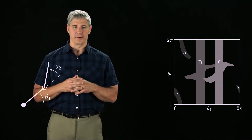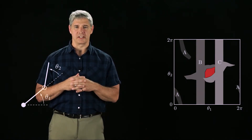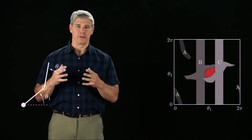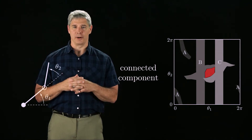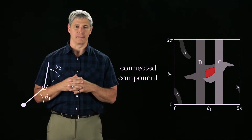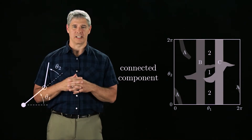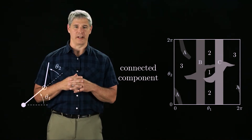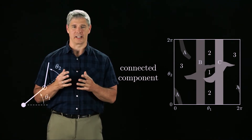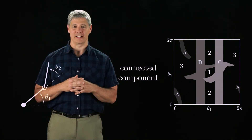Notice that if the robot were in a configuration in this red region here, there would be no way for it to escape being stuck between obstacles B and C. It could only move between configurations in this region. We call this region a connected component of the free space, and we label this connected component 1. In this example, there are three connected components of free space. This region labeled 2 is connected because the top and bottom edges of the square are connected, and this region labeled 3 is connected because the left and right edges and top and bottom edges are connected. For a path to exist between two configurations, they must lie in the same connected component of free space.